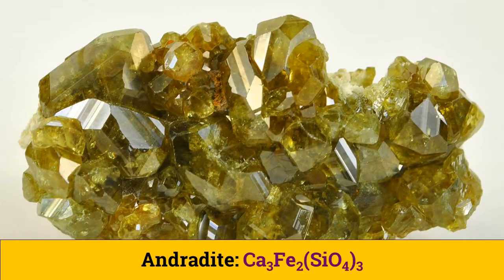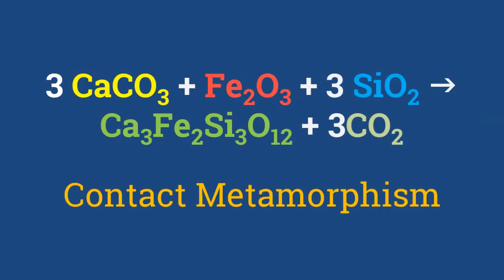Coming to the ugrandite group, the green color of andradite stems from the presence of chromium impurities. Andradite occurs in igneous and metamorphic rocks and is also common in limestone that has undergone contact metamorphism.